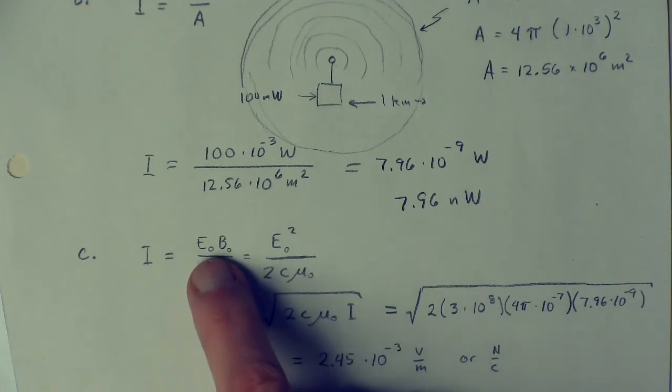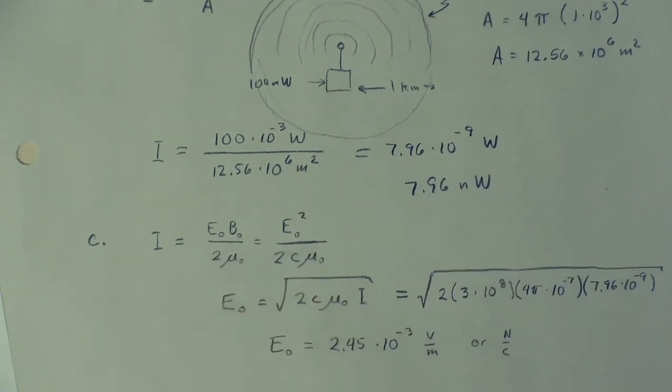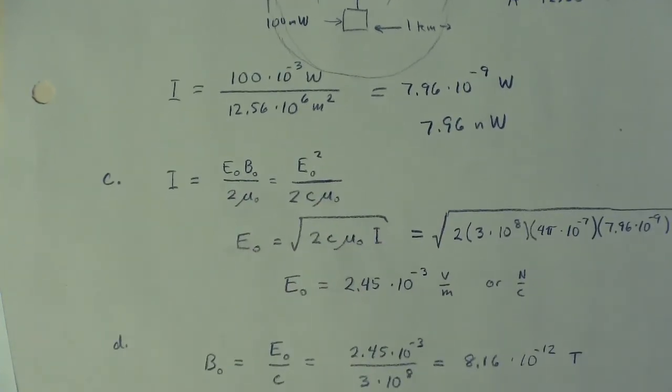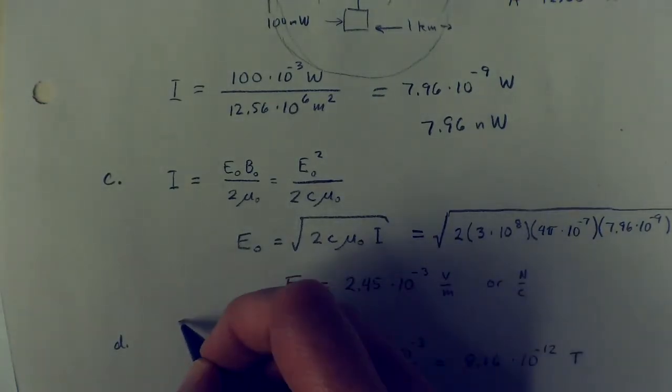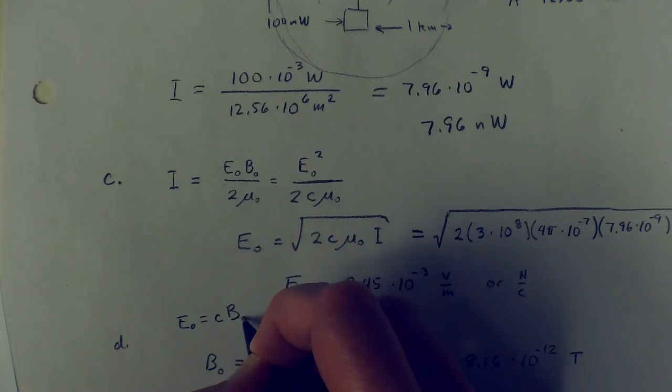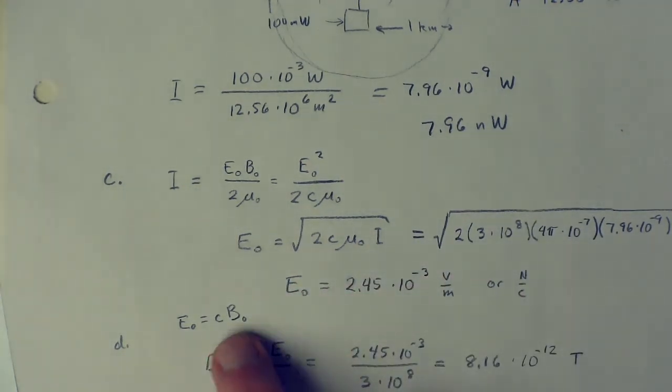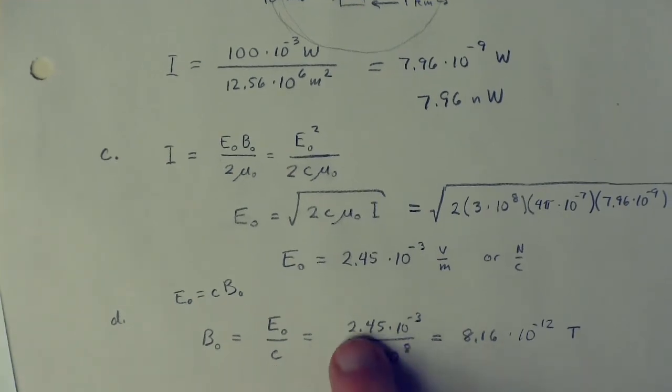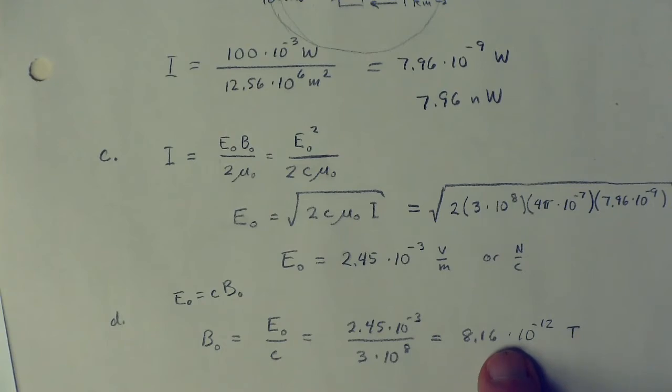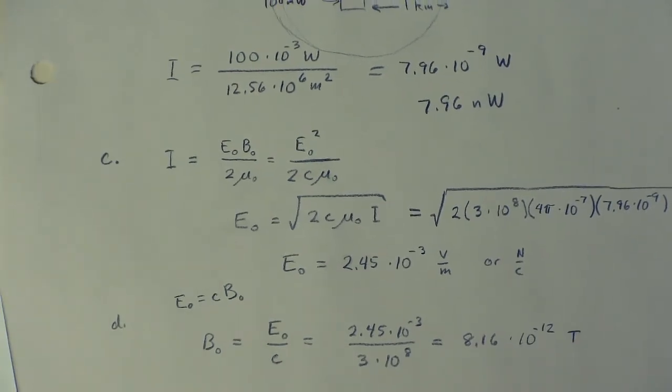Then to get the B field, you could go back to this, or you could find it even easier, just use the simple relation that the electric field is c times the magnetic field. And now we're trying to get the magnetic field, so we take E and divide by c in this case. So you take that 2.45, divide by 3 × 10⁸, and you get a very, very tiny magnetic field. 8 × 10⁻¹² tesla. That's an example of radio waves.